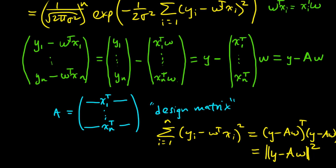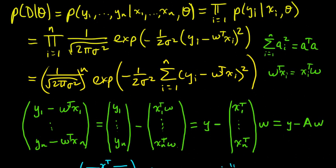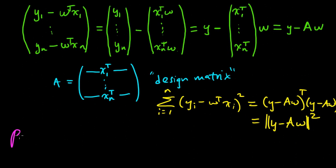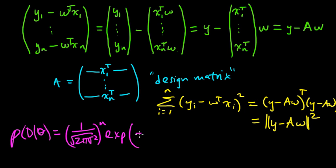Now let's rewrite what we just found. So the probability of the data given theta equals 1 over 2 pi sigma squared to the N times e to the minus 1 over 2 sigma squared times y minus Aw transpose times y minus Aw.